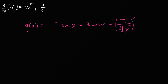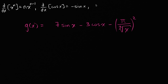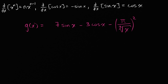We also need to use the fact that the derivative of cosine of x is equal to negative sine of x, and the other way around, the derivative with respect to x of sine of x is equal to positive cosine of x. So using just that, we can actually evaluate g prime of x.